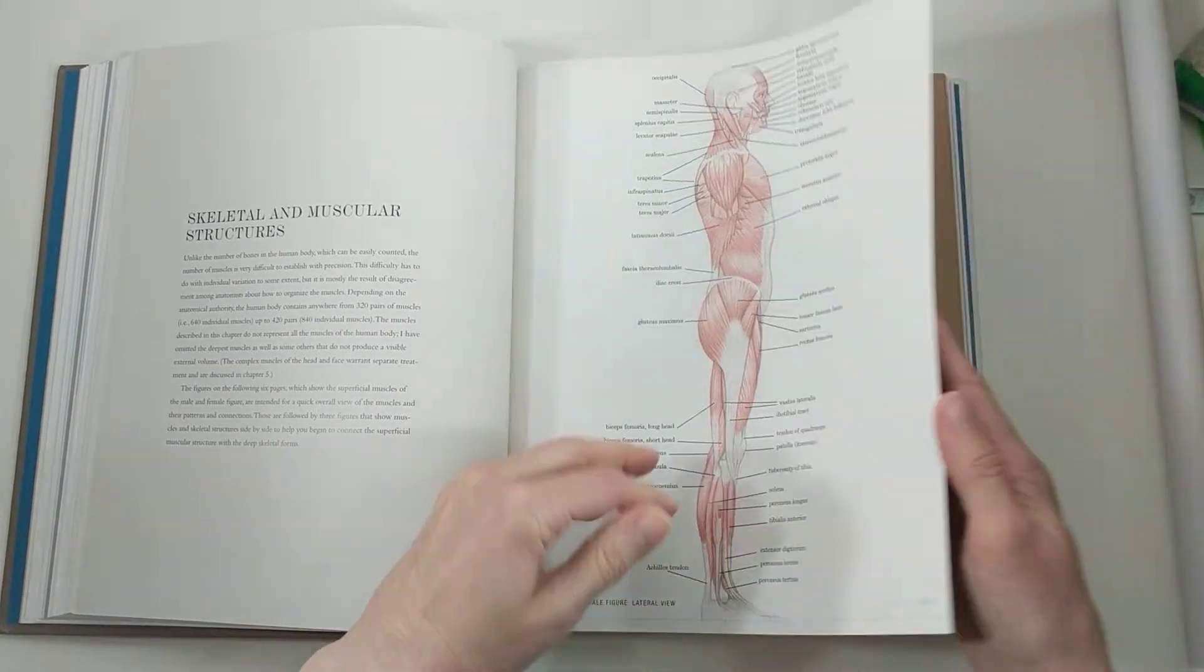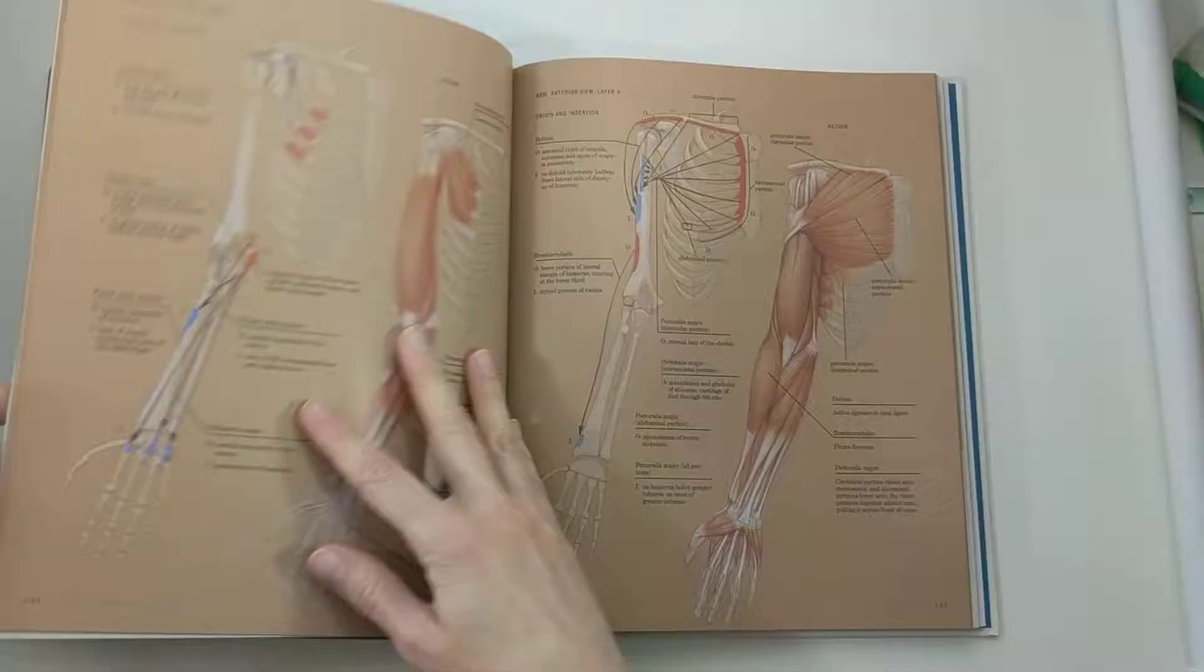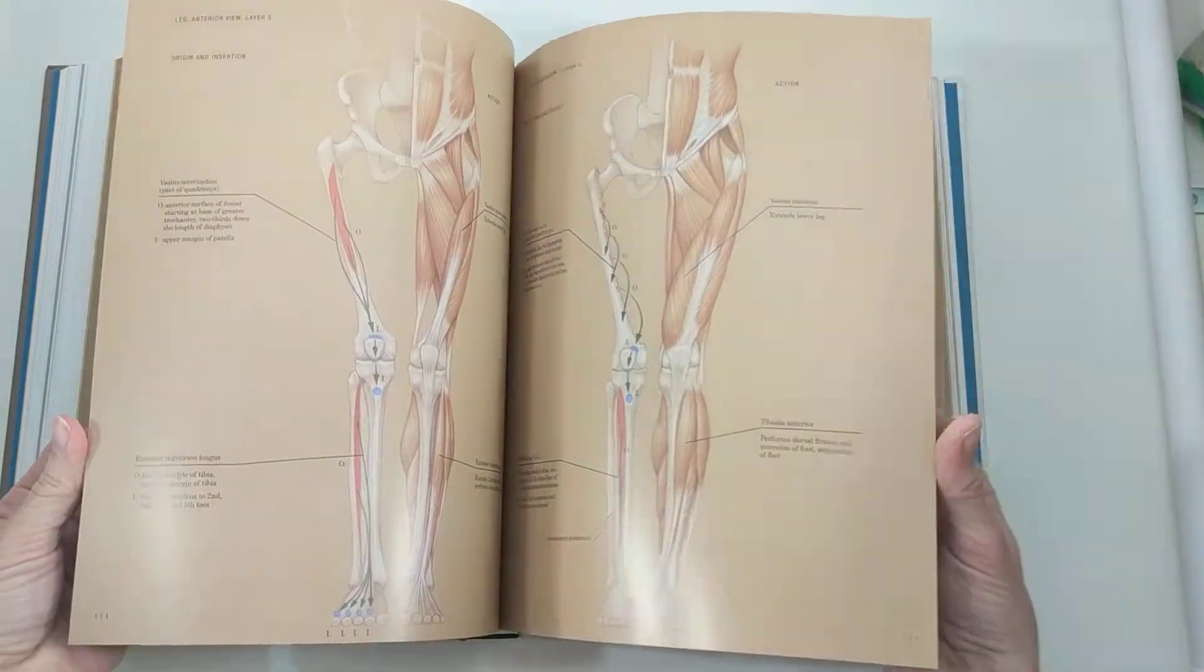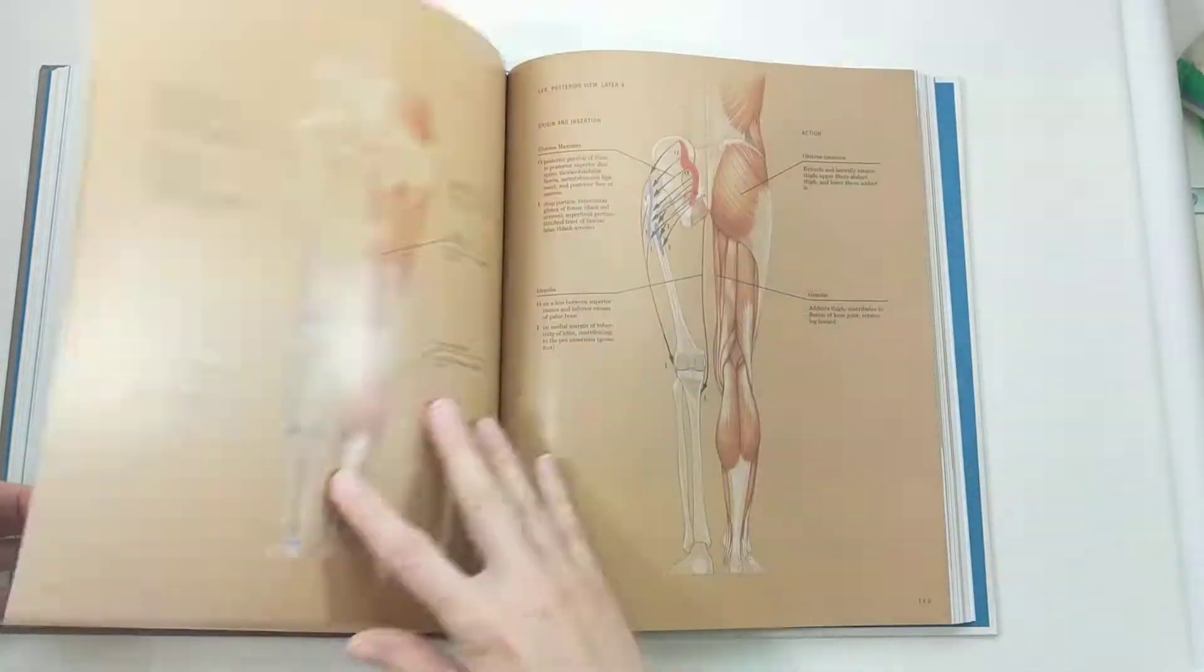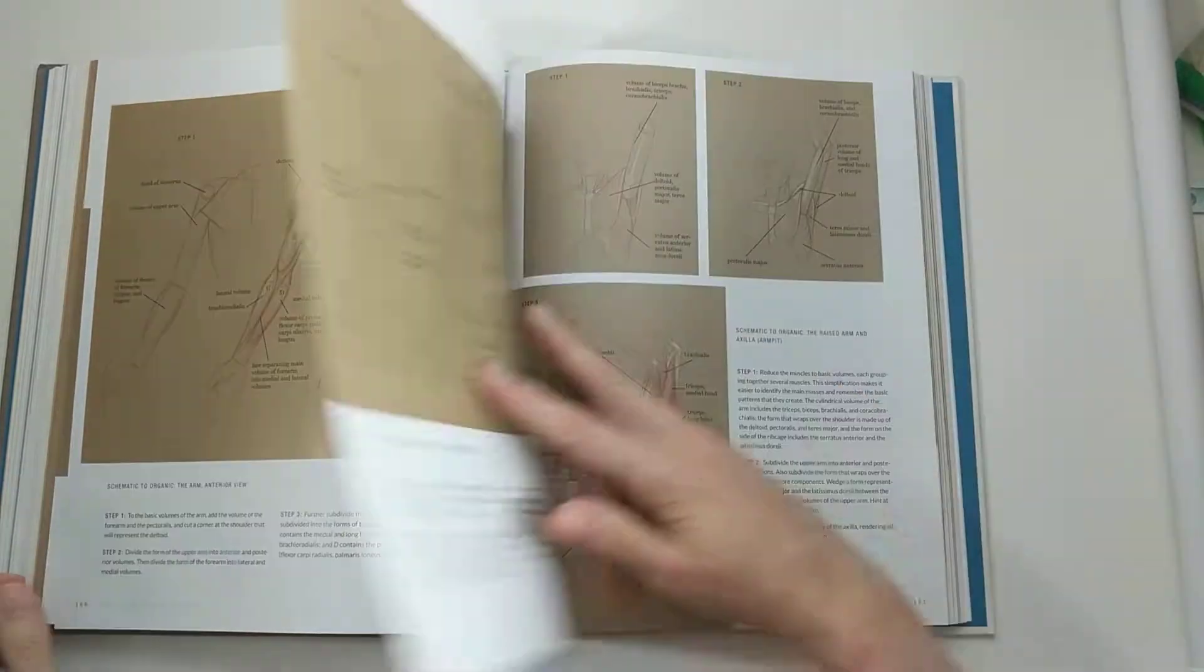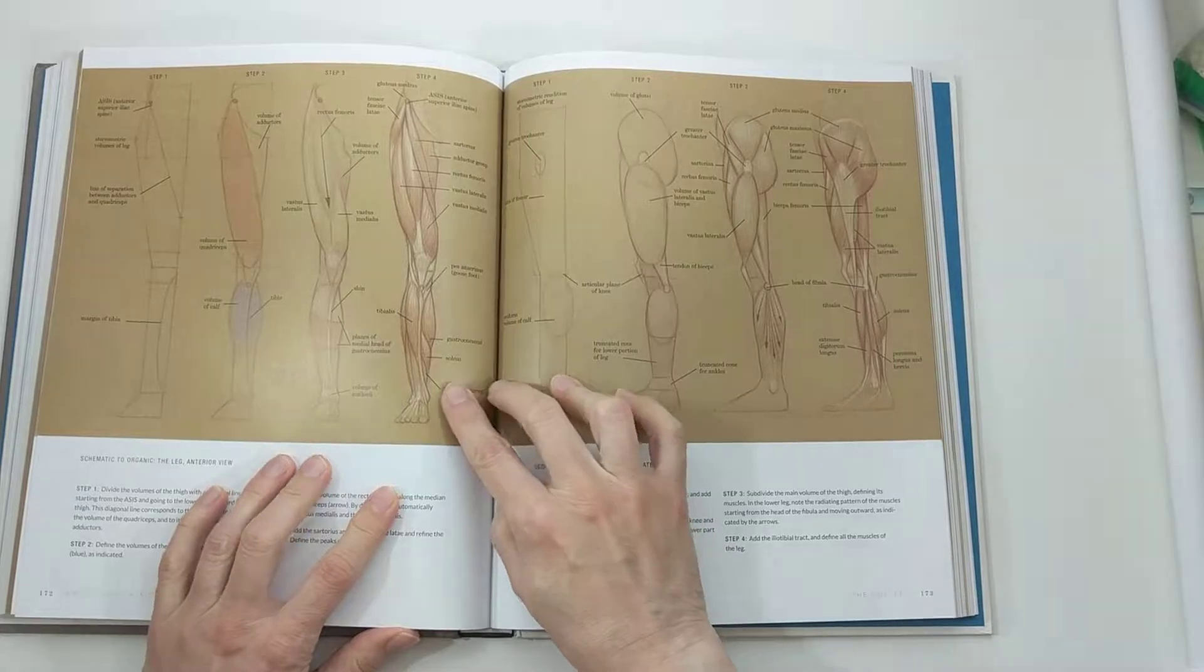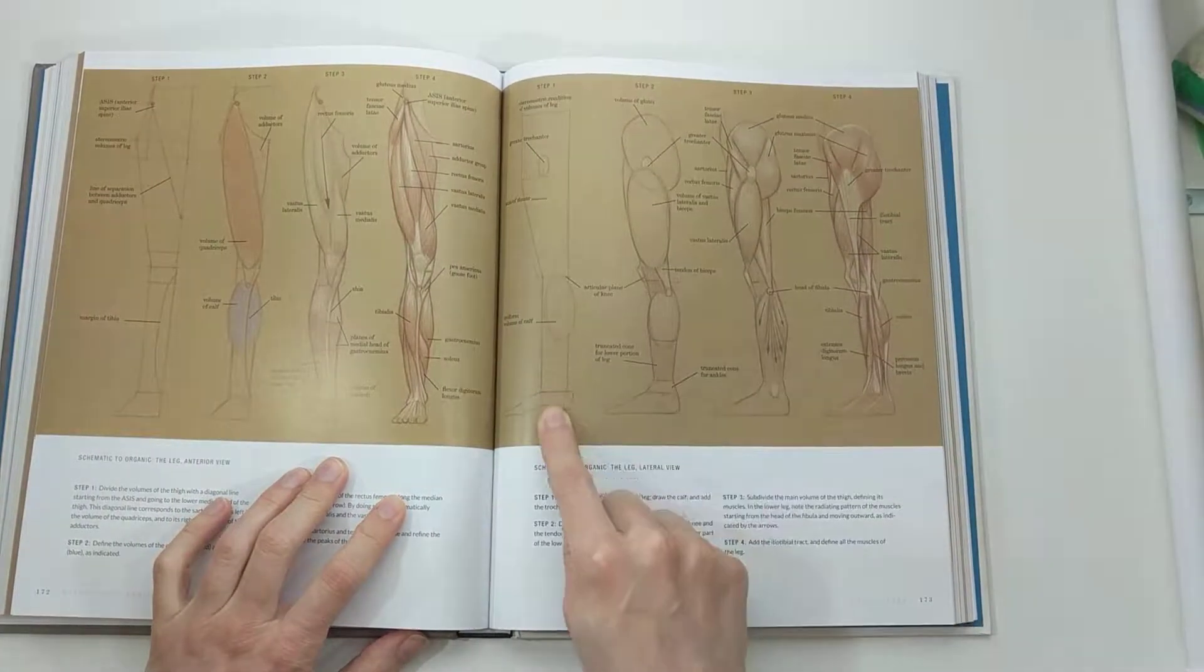So it goes through the muscular system, and this demonstrates one of the things that I really like about his approach is that he starts out very geometric, and then he puts in more organic shapes.